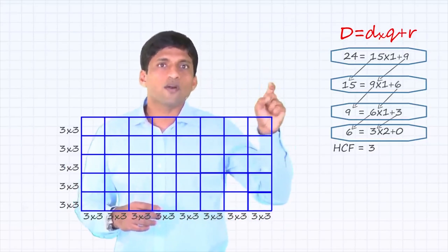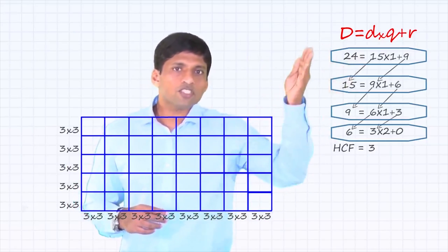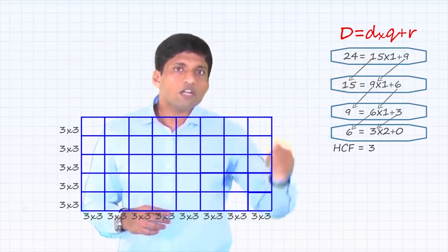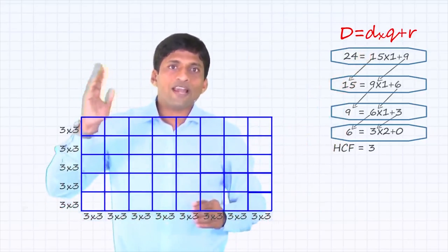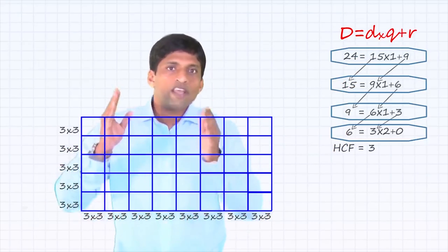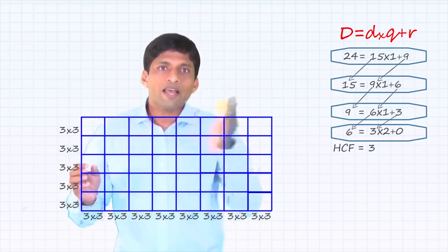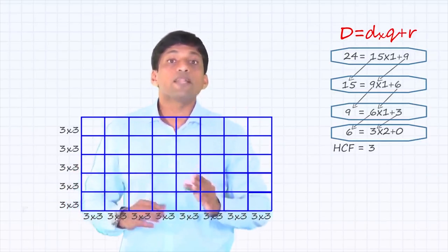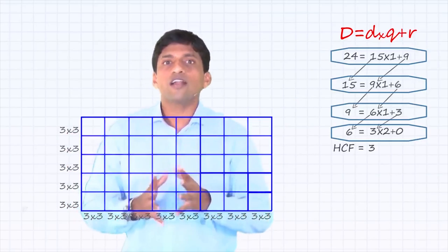Let me help you relate to this one more way using the process: dividend, divisor, quotient, remainder. Every step, the divisor becomes the next dividend and the remainder becomes the next divisor — continue till remainder is 0. The similar comparison here is: every step, out of length and breadth, breadth becomes the length and the remainder becomes the next breadth. So B becomes L and R becomes B. Continue doing this till nothing is left out — till the area is completely covered.